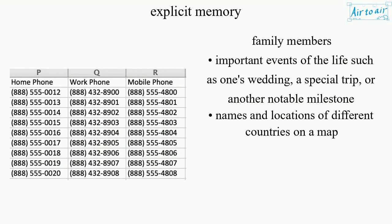Additional examples include important events of one's life such as one's wedding, a special trip, or another notable milestone, as well as the names and locations of different countries on a map.